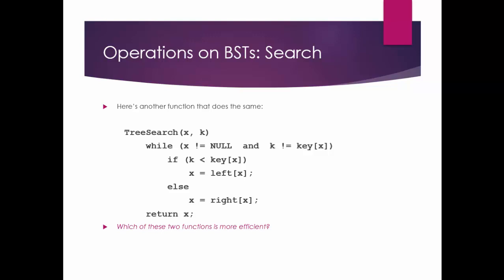Another function that does the same thing is the iterative version — not recursive. We use a loop here. We are using a while loop: while x is not equal to null and k is not equal to key of x, if k is less than key of x then x equals left of x, using an array and taking the left element stored as root. Else x equals right of x, and the loop executes again. If x is null it will not enter the loop. If k does not equal the key, only then it enters the loop. Otherwise it returns the value of x.